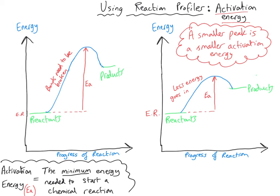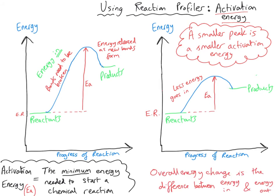The curve goes down on the right-hand side because energy is released when new bonds form. That's why we get these overall energy changes - energy has to go in to make the reaction happen, that's the activation energy, and then energy comes out when new bonds form. The difference between those two amounts - the in and the out - is what the overall energy change represents. For endothermic reactions, the overall energy is a positive change because more energy has to go in to break bonds than comes out when new bonds form.